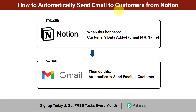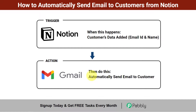Here's how to automatically send email to your customers from Notion. As soon as you add the email address and name of a customer into Notion, an email will get sent automatically via Gmail — so you do not have to manually copy customer details, compose an email, and send it to each customer one by one. You just need to set an automation between Notion and Gmail once, and after that, emails will get sent automatically.